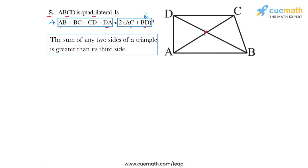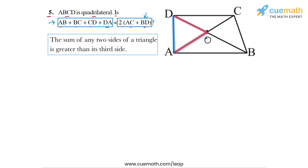Let's take the point of intersection of the diagonals to be point O. We are going to apply this property of triangles to four different triangles. Observe the figure carefully — I am highlighting those four triangles. We will apply this property to triangle OAB, then to triangle OBC, then to triangle OCD, and then to triangle ODA.